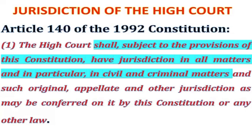Apart from those jurisdictions taken from the High Court by the Constitution — for example, the jurisdiction to enforce the Constitution given to the Supreme Court under Articles 2 and 130, or presidential election petitions given to the Supreme Court under Article 64 — apart from those jurisdictions given to other courts, every other matter the High Court has jurisdiction in. That's why Article 140 says the High Court shall have jurisdiction in all matters, and in particular in civil and criminal matters, and such original, appellate and other jurisdiction as may be conferred on it by this Constitution or any other law.